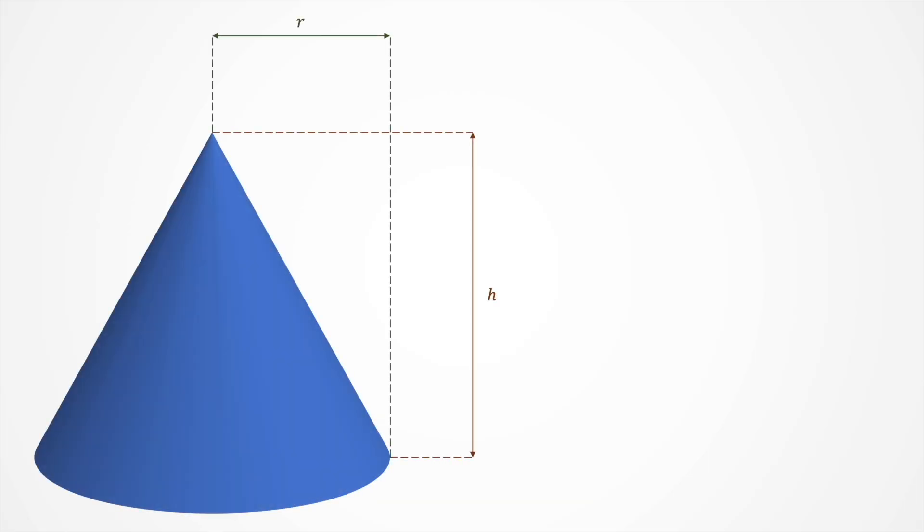I'm sure you have calculated the volume of a cone with height h and radius r at least once in your life, with this formula, but where does it come from?